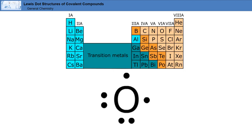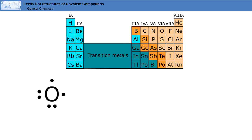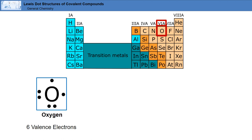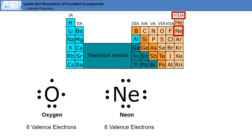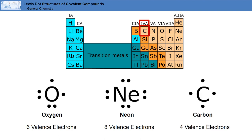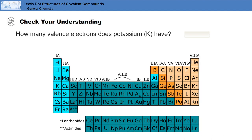We represent valence electrons using a Lewis dot symbol. Each element symbol is surrounded by dots, which represent its valence electrons. For example, oxygen has six valence electrons, and this is its Lewis dot symbol. Each dot represents one of oxygen's six valence electrons. Neon has eight valence electrons, and this is its Lewis dot symbol. Carbon has four valence electrons, so its Lewis dot symbol looks like this.